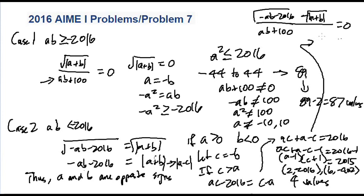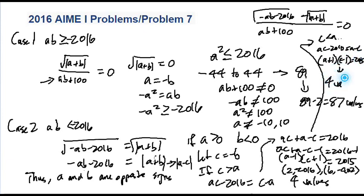The second sub-case is if c is less than a, and you go through the same process, except it becomes ac minus 2016 equals a minus c, and you get a different factorization: (a plus 1)(c minus 1) equals 2015, and you get another four values which are all valid. And you can switch these solutions between a and b, so you get eight values per factorization, giving 16 total extra values. You add 87 to 16 and you get 103, and that's the answer.